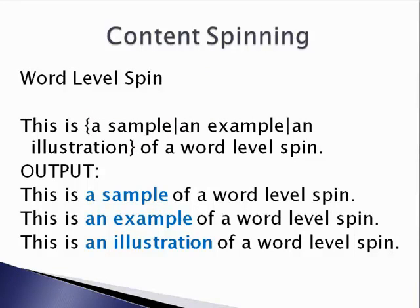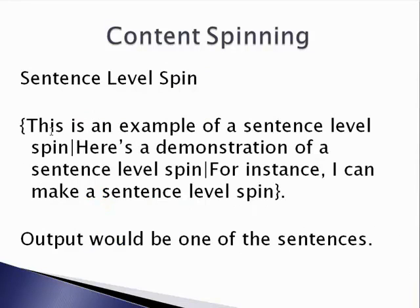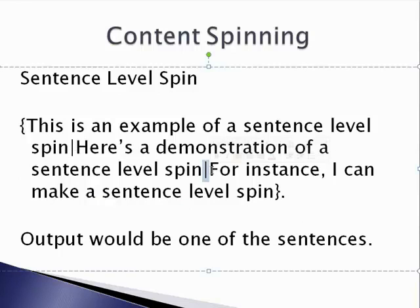Let's take a look at sentence level. So we have a bracket, and then 'this is an example of a sentence level spin', and then a pipe bar. Here's another sentence: 'here's a demonstration of a sentence level spin', and a pipe bar, and another sentence: 'for instance, I can make a sentence level spin', and then a closing bracket. So the output would be that it chooses one of those sentences.